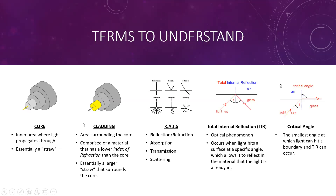We also have the cladding, which is the area surrounding the core. It is comprised of a material that has a lower index of refraction than the core — essentially a larger straw that surrounds the core, a straw within a straw. Finally, we have RATS, which stands for reflection or refraction depending on what you're doing, absorption, transmission, and scattering. There are some brief examples describing each one.